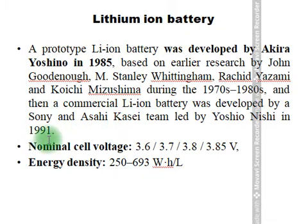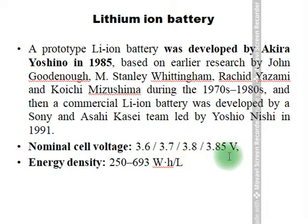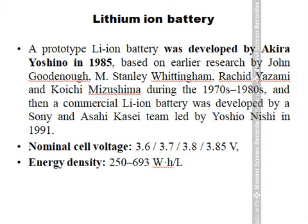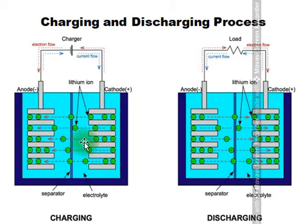The nominal cell voltage of lithium-ion batteries is 3.6, 3.7, 3.8, or 3.85 volts, and the energy density ranges from 250 to 690 watt-hours per liter. Even higher values are becoming available through ongoing research.